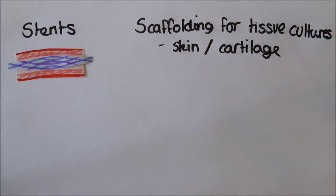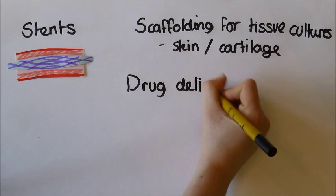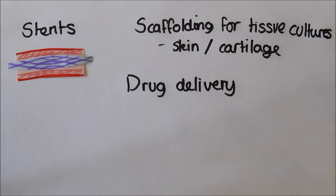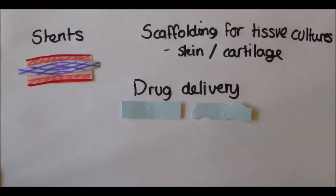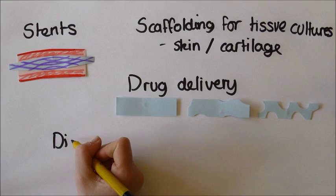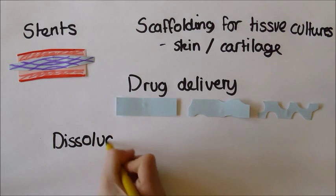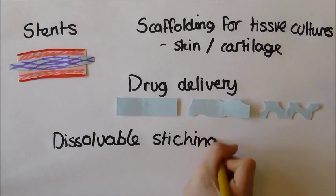Plastic can be used for drug delivery. A thin dissolvable plastic wafer containing drugs can be placed inside the body and releases the drug at a set rate as it dissolves. This can be particularly useful in chemotherapy where the precise location of treatment could mean reducing the amount of healthy non-cancerous cells killed. Similarly, dissolvable stitches also use dissolvable plastics.